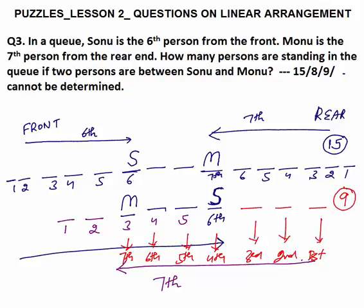This is also correct. So both 15 and 9 are correct — there are two arrangements possible in this scenario. The question asks how many persons are standing in the queue. The answer could be 15 or 9, but we cannot find an exact answer. Many will tick 15 and some will tick 9, but both cases are equally correct. So the answer cannot be determined.